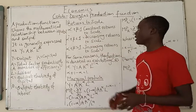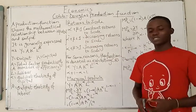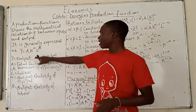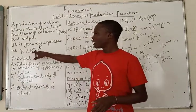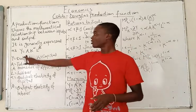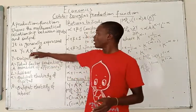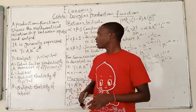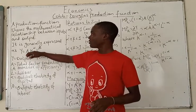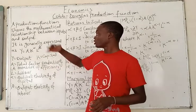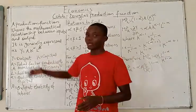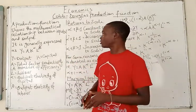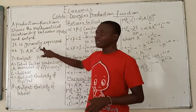When alpha plus beta equals 1, we have constant returns to scale. That simply means that if all the inputs — here we have two inputs, capital and labor — if they are changed by the same proportion, the output will also change by the same proportion. So a proportional change in capital and labor at the same time will lead to a proportional change in Y. For example, if there is a doubling of inputs — instead of having K and L we now have 2K and 2L — we are definitely going to have 2Y.